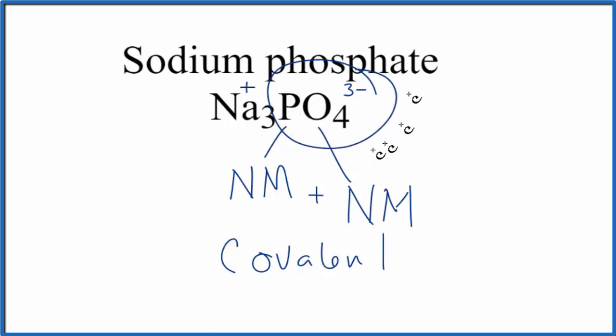But the bond between the phosphate ion, PO4 three-minus, and each of these positive sodium ions, that will be an ionic bond. So we have both an ionic bond overall, and then within the phosphate, covalent bonds.